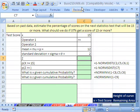We're talking about the normal probability distribution. We just got done doing probability for less than or equal to a value. Now we want to talk about greater than. Here's our question: Based on past data, estimate the percentage of scores on the next statistics test that will be 15 or more.